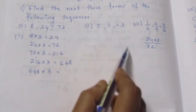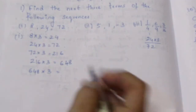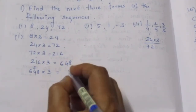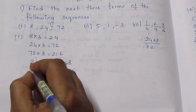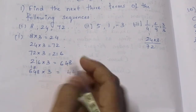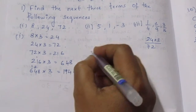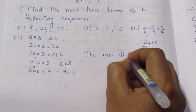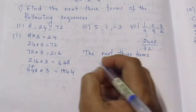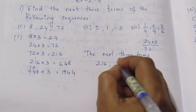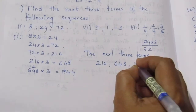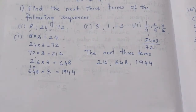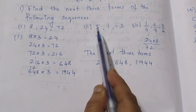This concept is correct. We multiply by 3 each time: 8 x 3 = 24, then 72 x 3 = 216, 216 x 3 = 648, 648 x 3 = 1944. So the next 3 terms are 216, 648, and 1944. Now let's move to the second sum.